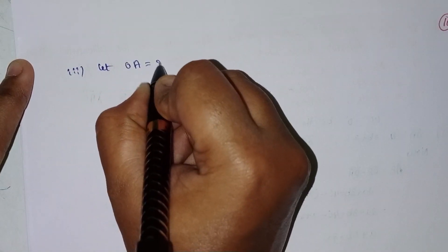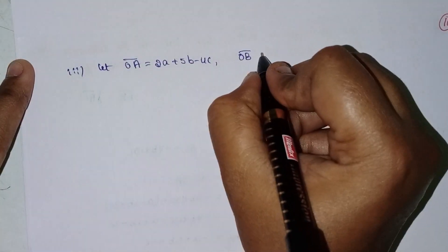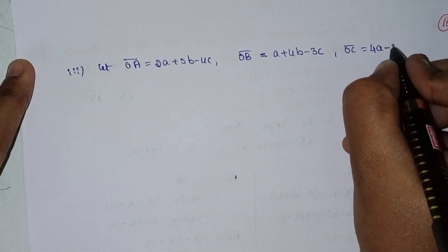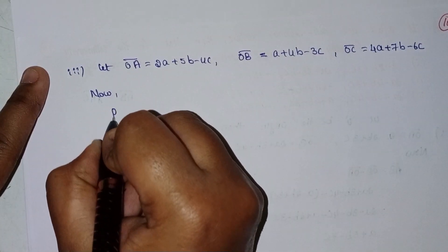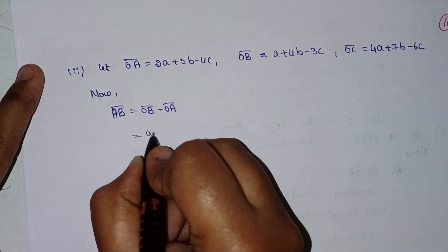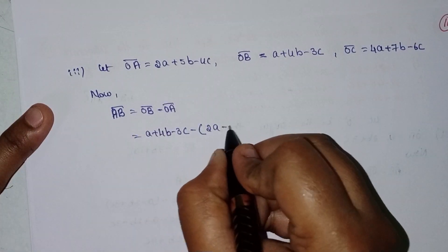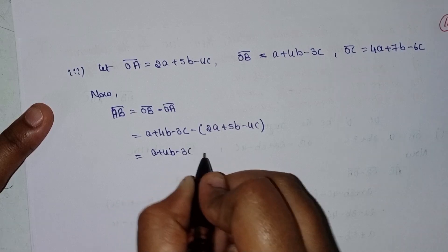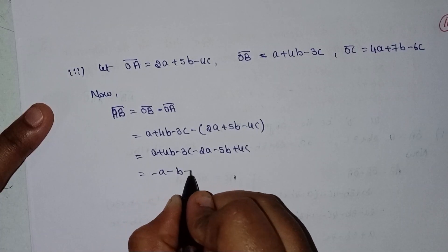Third sub-problem. Let OA equal 2a plus 5b minus 4c, OB equal a plus 4b minus 3c, OC equal 4a plus 7b minus 6c. Now AB equals OB minus OA: a plus 4b minus 3c minus (2a plus 5b minus 4c), which gives a plus 4b minus 3c minus 2a minus 5b plus 4c, equaling minus a minus b plus c.